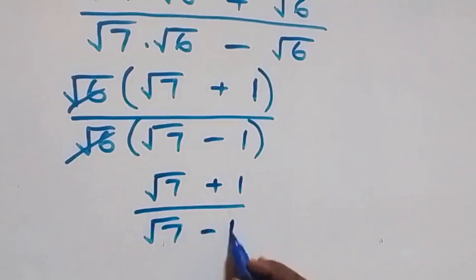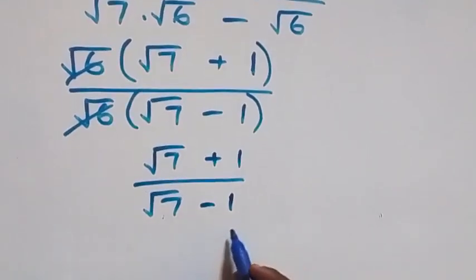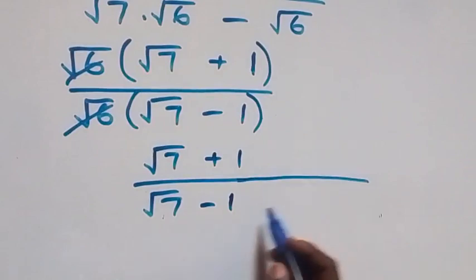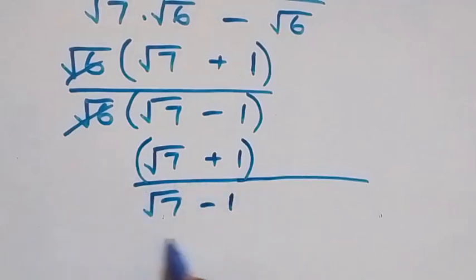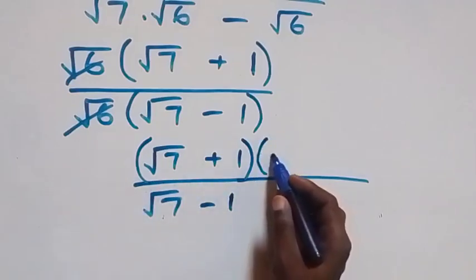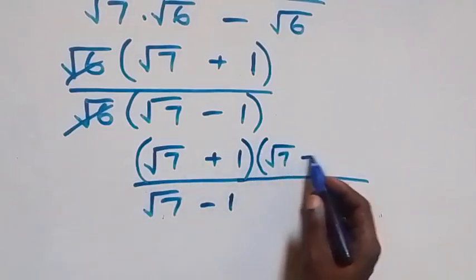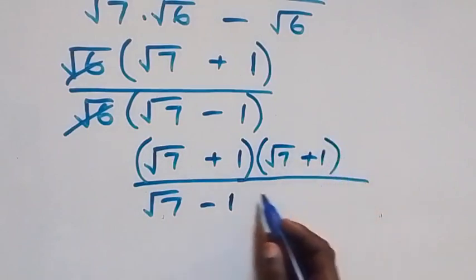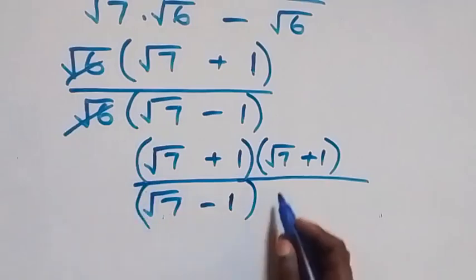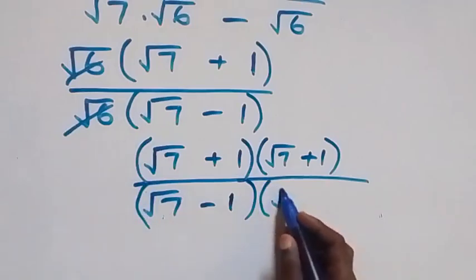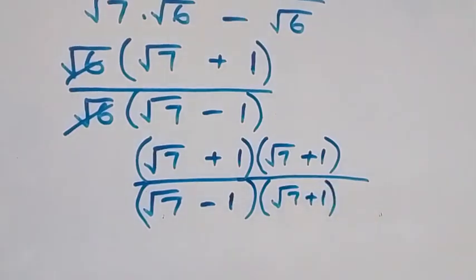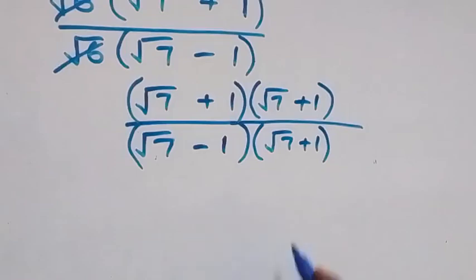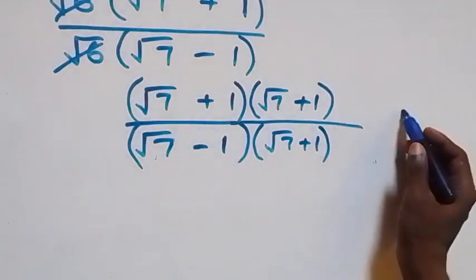From here we can rationalize this and multiply by the conjugate. So we multiply by the conjugate of the denominator, which is (root 7 plus 1), and also multiply the denominator by the same thing, which is (root 7 plus 1).